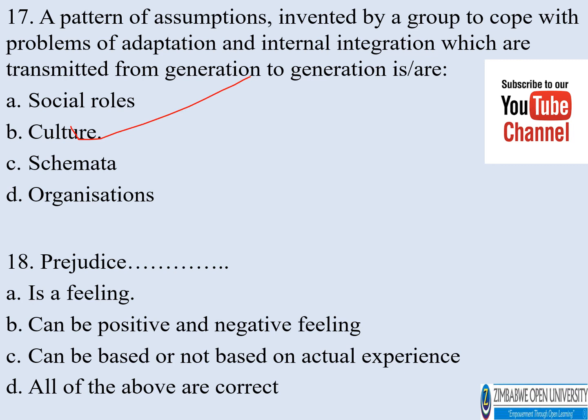Number eighteen. Prejudice: a) is a feeling, b) can be a positive and a negative feeling, c) can be based or not based on actual experience, d) all of the above are correct. The correct answer is d.